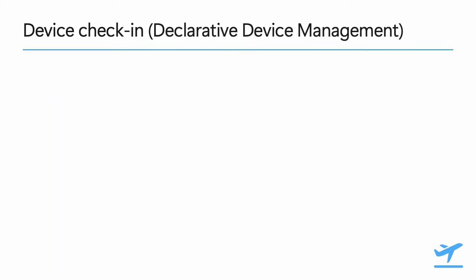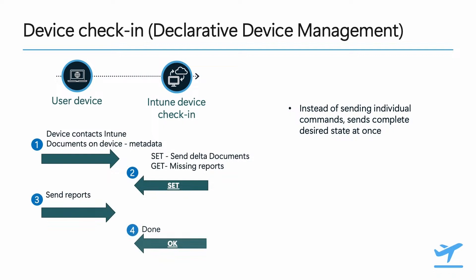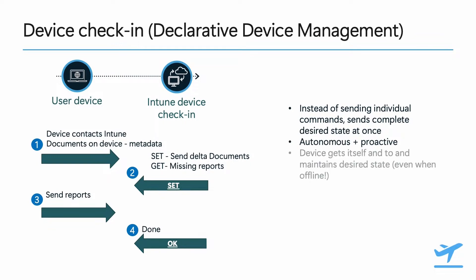Declarative Device Management is an extension that builds on top of the OMA DM protocol. At its core, it's a more efficient and reliable way of managing devices. Instead of sending bits and pieces requiring multiple round trips, we use a single document that contains all the settings and desired state configurations, delivered in a single round trip. There is no longer a dependency on the Intune service initiating a check-in for things to happen. The device will primarily and regularly compare on its own the current system configuration versus the intended configuration using the local copy of that DDM document. When deviations from the intended configuration are found, the device will try to address them locally, and when that is not possible, the device will proactively trigger a check-in with Intune to address the drift.